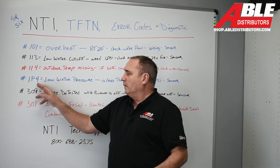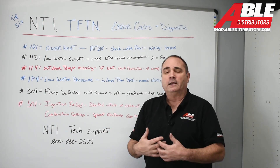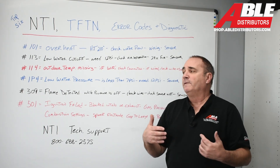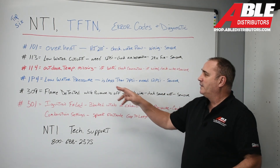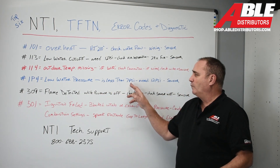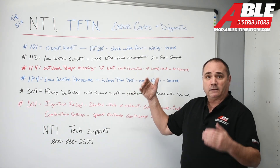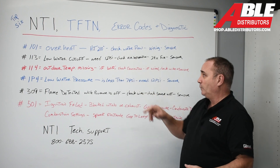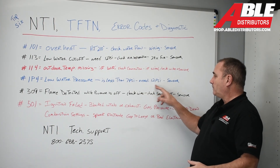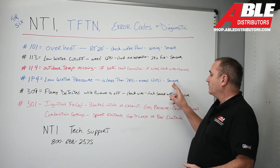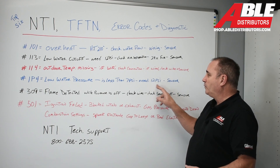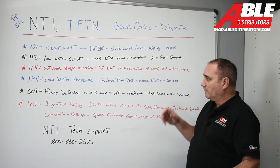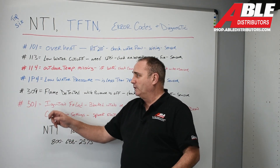Code 1P4: low water pressure. Make sure your fill valve is operating properly. This typically triggers if you go below 7 psi — that's low. We want 12 psi. Once you bring it up to 12 psi, if it's still showing this code, it might be the sensor. Tech support would be good for that.